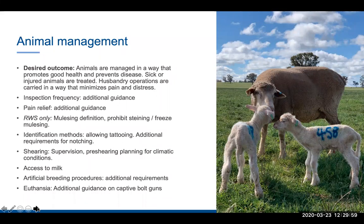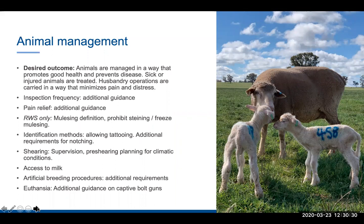On access to milk: setting a minimum requirement for lambs to get milk, whether suckling on their mother or an orphaned lamb being artificially reared on milk — just setting that baseline. On artificial breeding procedures: additional requirements arose from working group conversations about laparoscopic artificial insemination. We've set more prescriptions around this, making sure pain relief is used for these operations and being much clearer about what's expected to protect welfare.